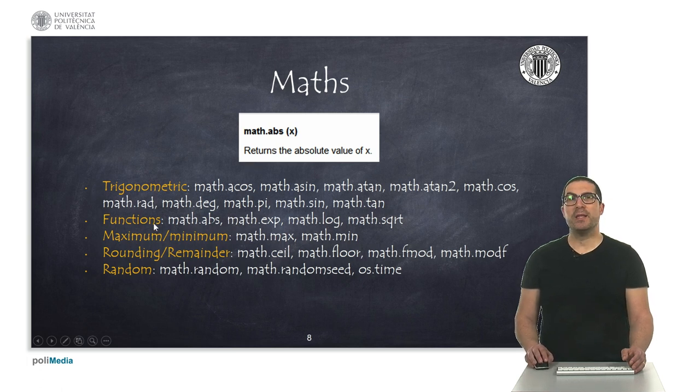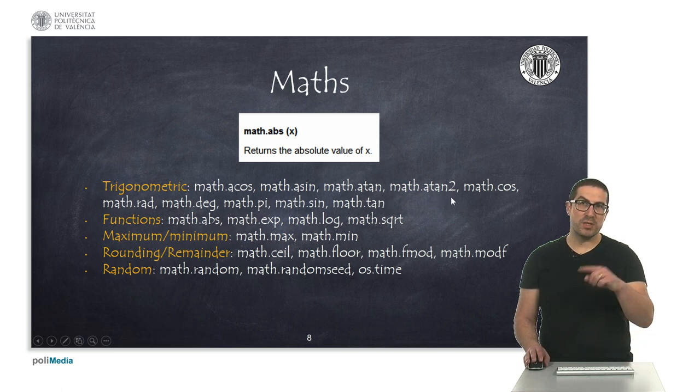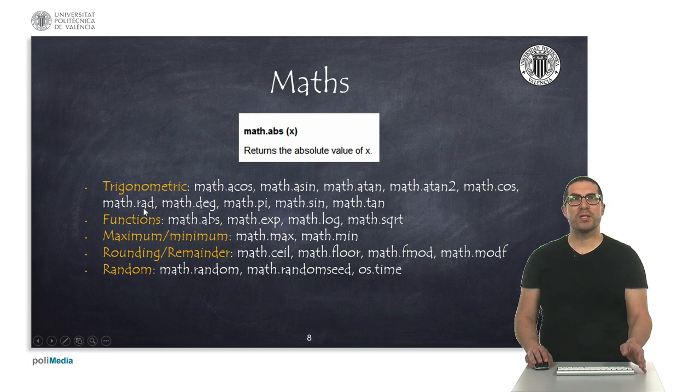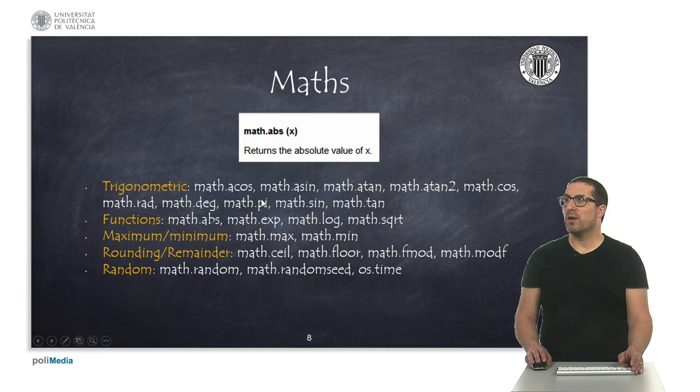I'm here just highlighting some of the most important ones, like the ones for trigonometric functions like arccosine, arcsine, arctan. This is also the arctangent with two arguments, so it's in four quadrants. Cosine, also the sine here. Here we have functions for converting from radians to degrees and degrees to radians. We have the pi constant as well, the tangent. We have also, as I said, absolute value,